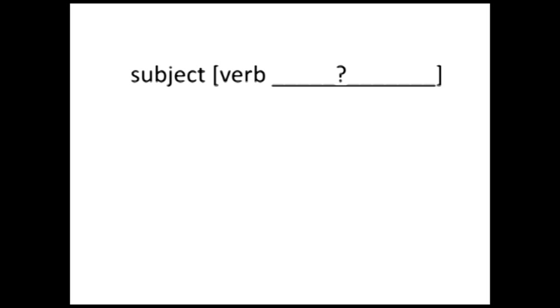To determine the clause type, look for the part that comes after the verb. There are two dimensions to think about. One is transitivity: is there a direct object and is there an indirect object? There are three possibilities — no object, one object, or two objects. The other dimension is complexity, which has to do not with objects but with predicative complements. For complexity there are only two possibilities: either one is there or it's not.